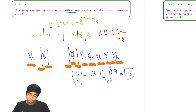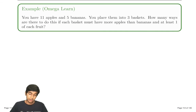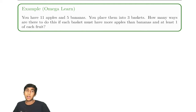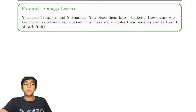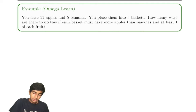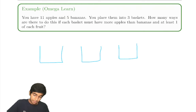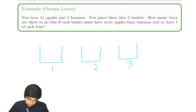Now let's look at another problem. You have 11 apples and five bananas placed into three baskets. How many ways are there to do this if each basket must have more apples than bananas and at least one of each fruit?